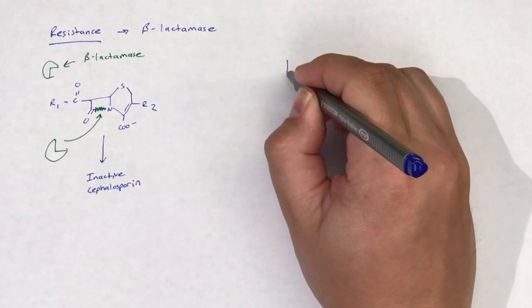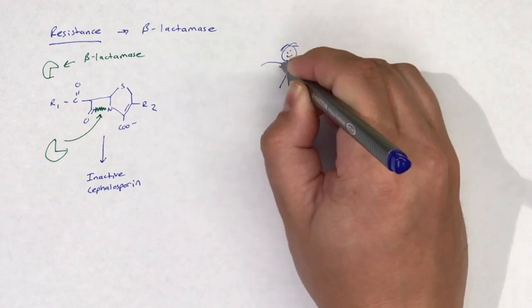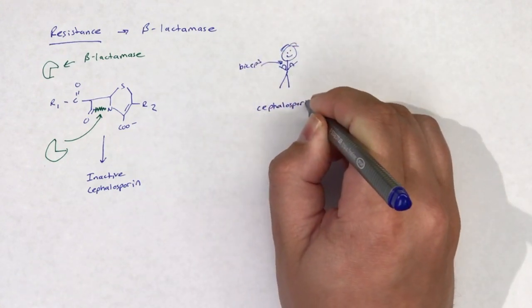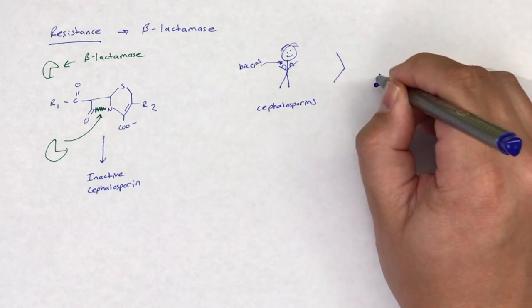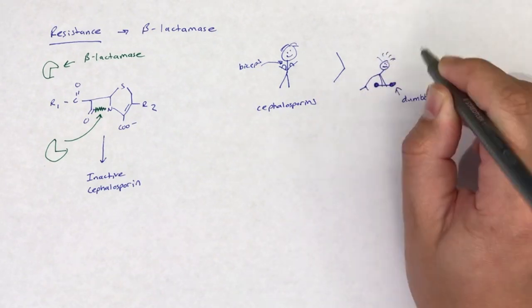Breaking the bond between the carbon and nitrogen and opening up the ring. This structural change to the cephalosporin is what renders it inactive by preventing cephalosporin interaction with transpeptidase.